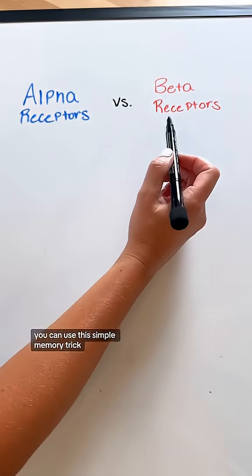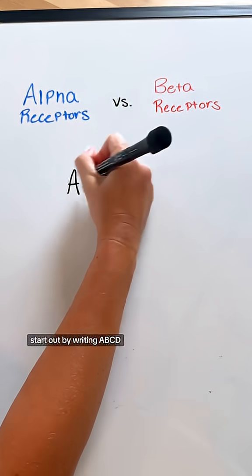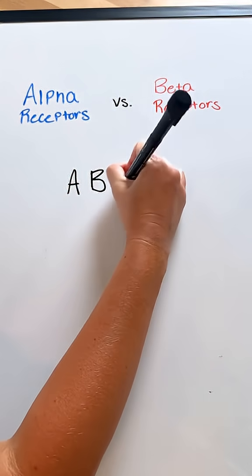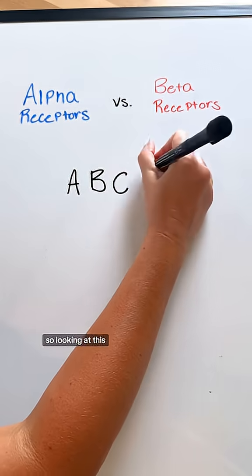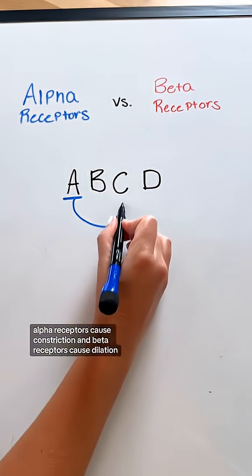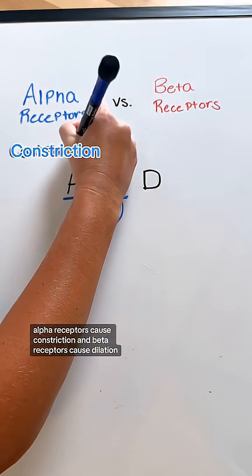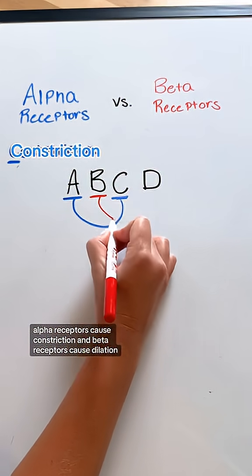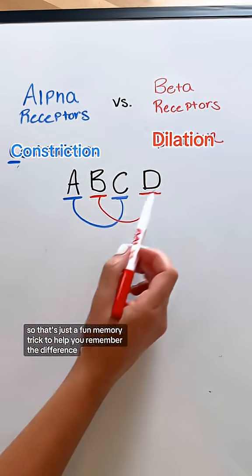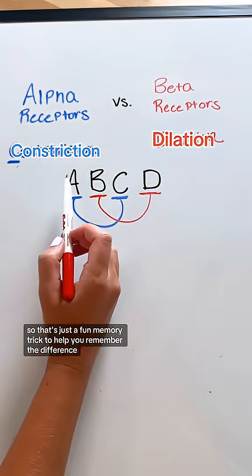You can use this simple memory trick. Start out by writing A, B, C, D. Looking at this, alpha receptors cause constriction and beta receptors cause dilation. That's just a fun memory trick to help you remember the difference.